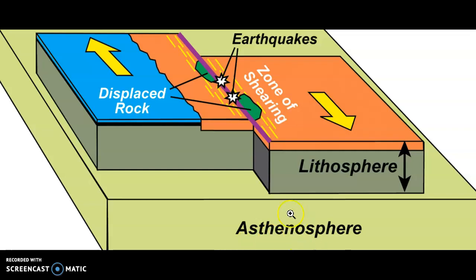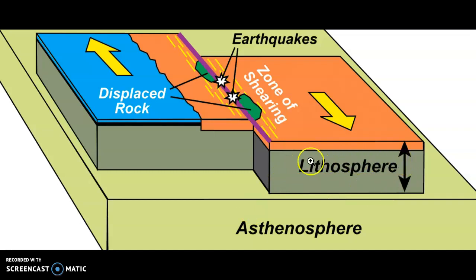Highlighting something very important here: the asthenosphere is technically the upper part of the mantle, or where the molten materials exist — where the magma comes from. The lithosphere is solid rock, which is part of the crust. So this is the crust on the surface which is moving and sliding past each other, and the asthenosphere is at the bottom.